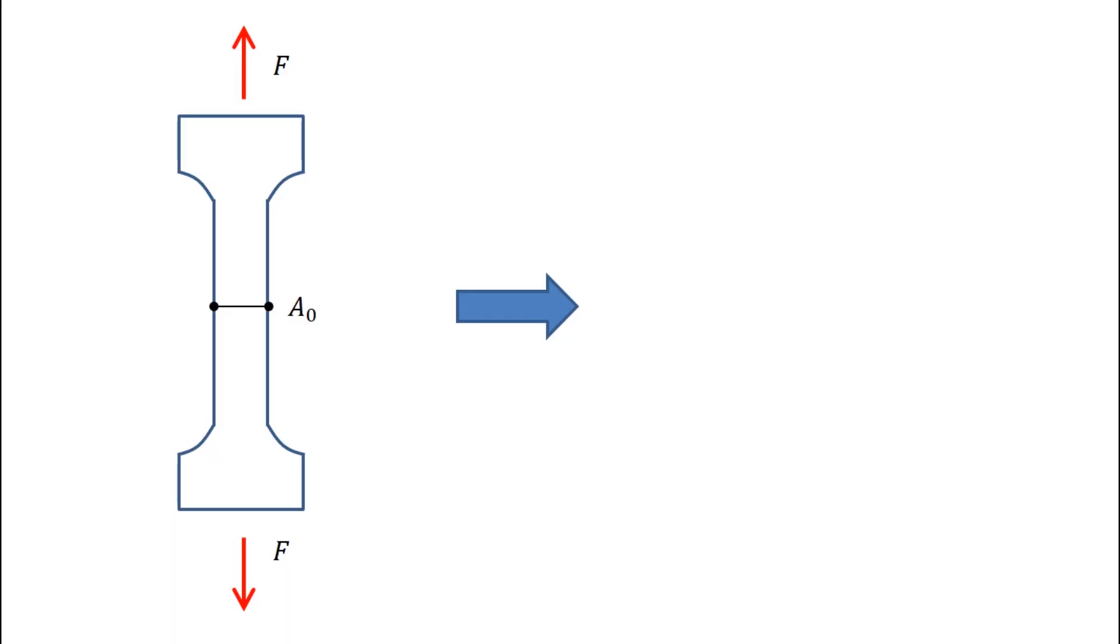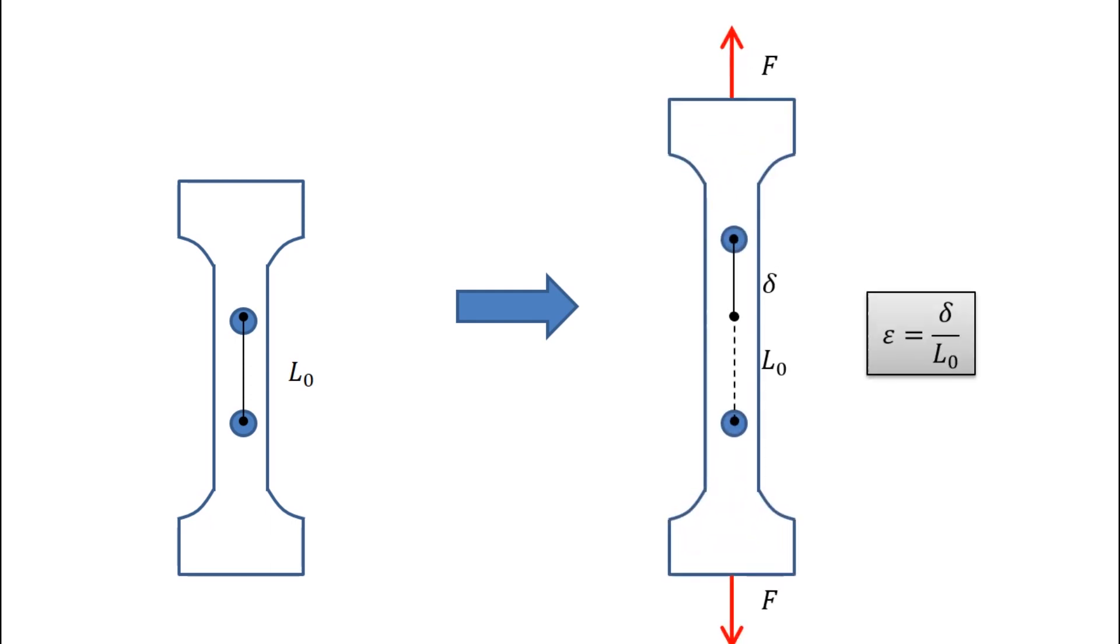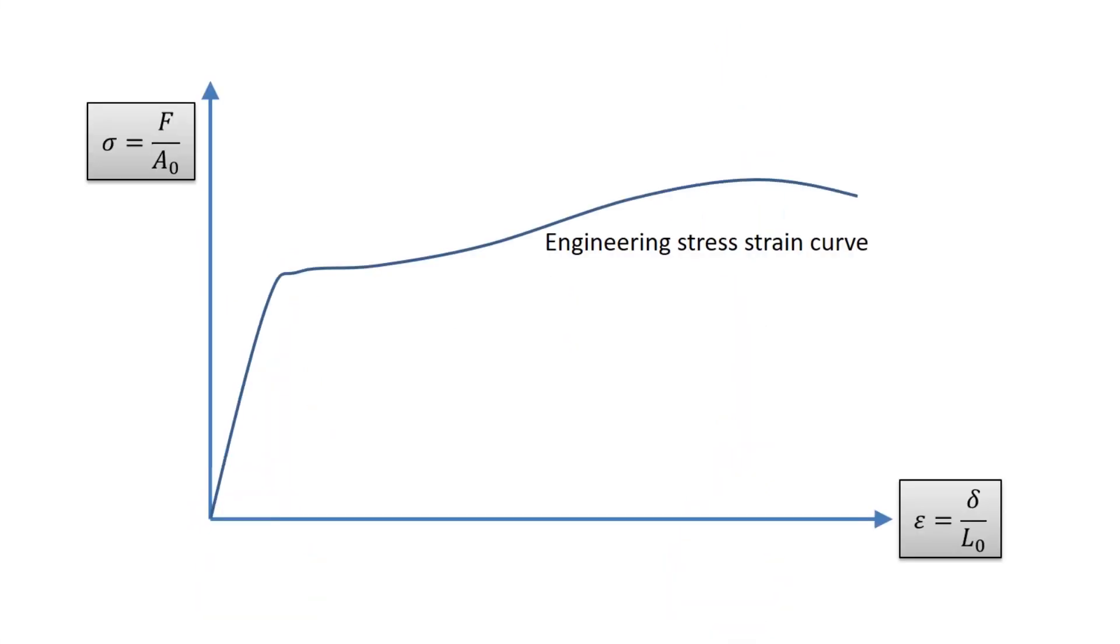The force measured during the test is converted into stress by dividing the force by the original cross-sectional area. The elongation measured during the test is converted into strain by dividing the elongation by the original length. The resulting relationship is called the engineering stress-strain curve.